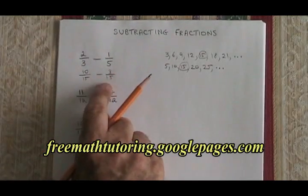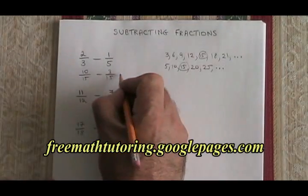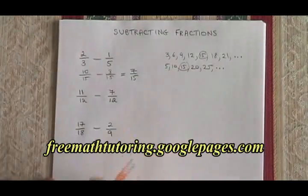Now that they are both over the common denominator of 15, I can say 10 fifteenths minus 3 fifteenths must be equal to 7 fifteenths. And I have my answer.